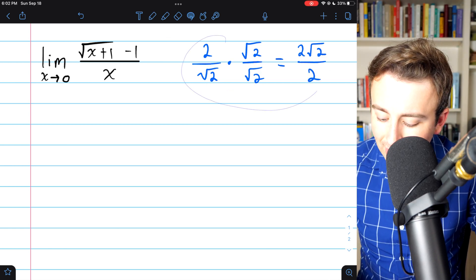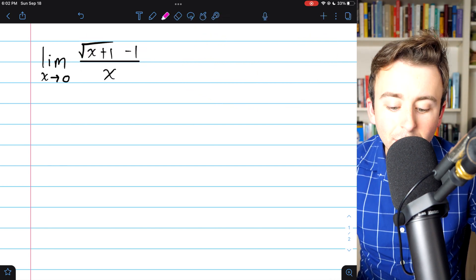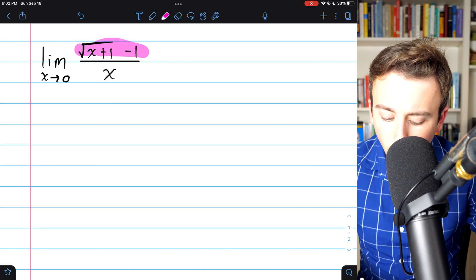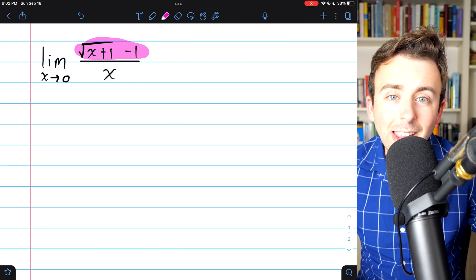Now of course, in the limit that we're starting with over here, it's a little bit more complicated, because we don't have the radical all on its own. We also have a minus 1, so we actually have a binomial here, but this isn't too troublesome to take care of.